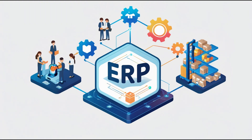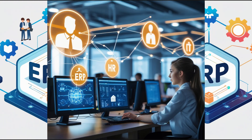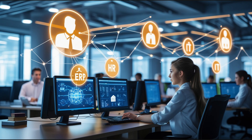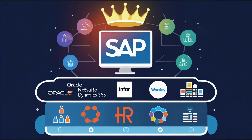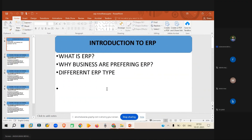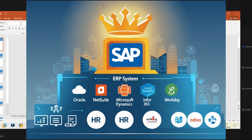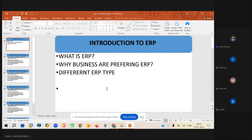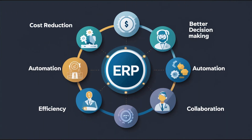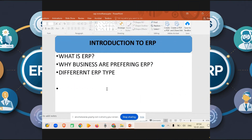Yesterday we looked at what ERP is and why businesses prefer ERP, and we saw different types of ERP systems. Today, let's understand why businesses prefer SAP. We have already discussed that, so let me just revise it once. SAP has better integration — integration within modules and integration with other systems.